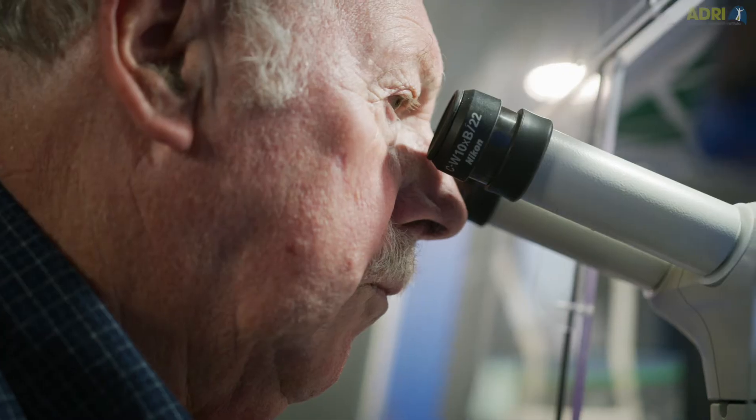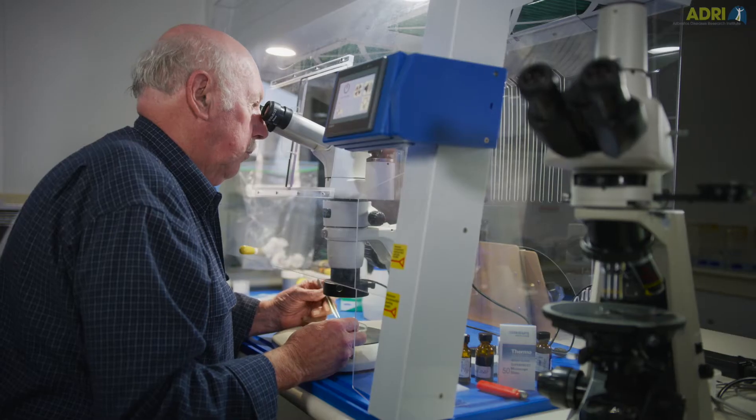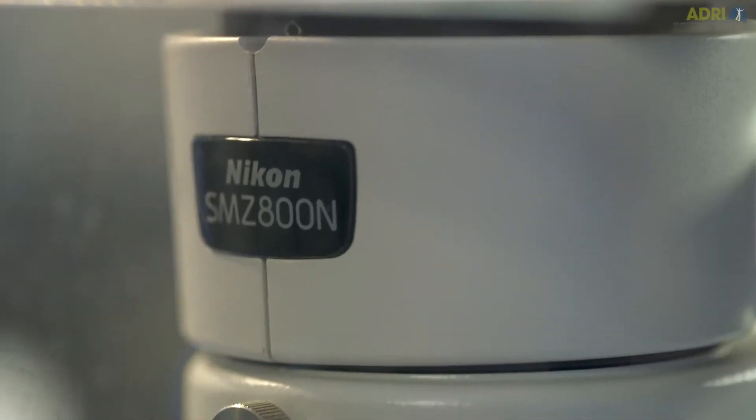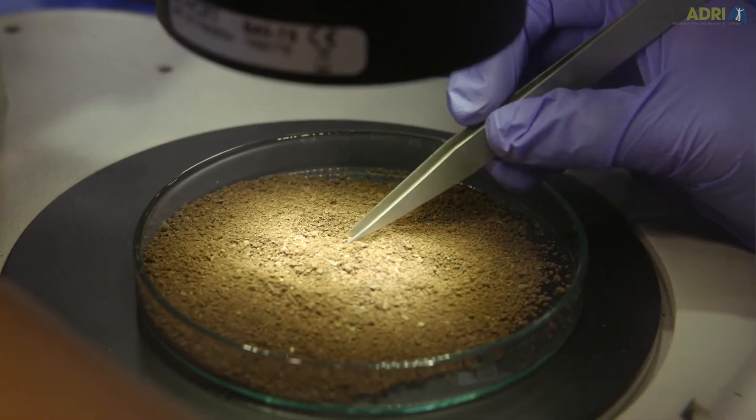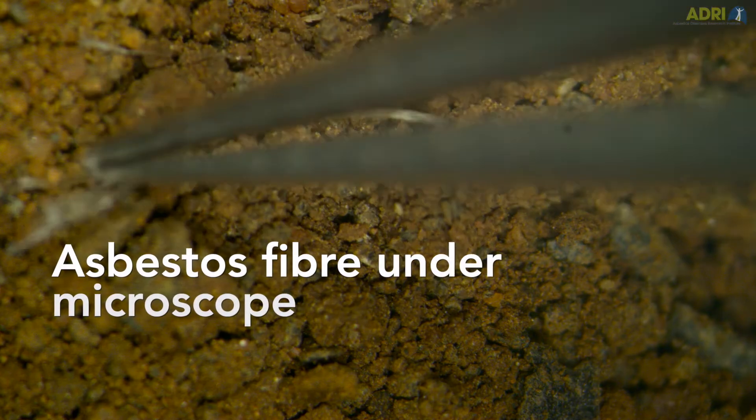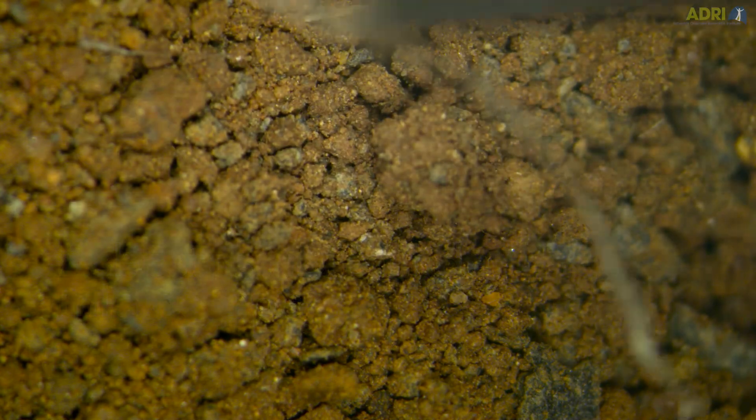You use the microscopes because the asbestos fibres are extremely small so you can't really see them with the naked eye. Just like having a big magnifying glass, it shines light down onto the sample and it's about a ten times magnification.